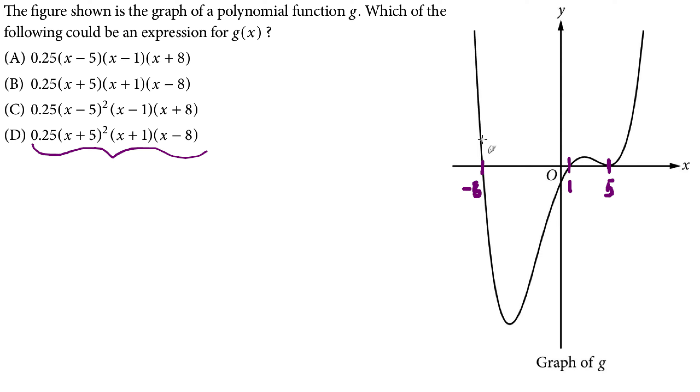And we know zero product property, factors, fundamental theorem of algebra, that if I have zeros at negative 8, 1, and 5, that means that I must have factors of x plus 8, x minus 1, and x minus 5. Therefore when you put in negative 8, negative 8 plus 8 is 0, so forth and so on.